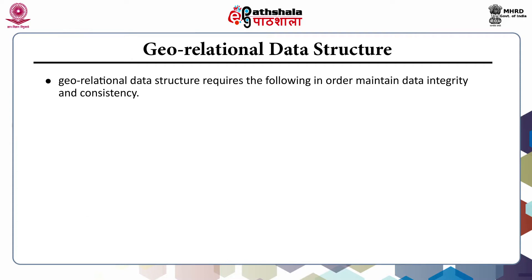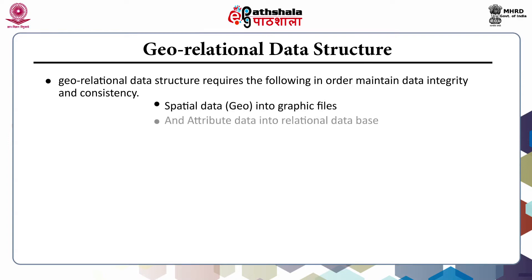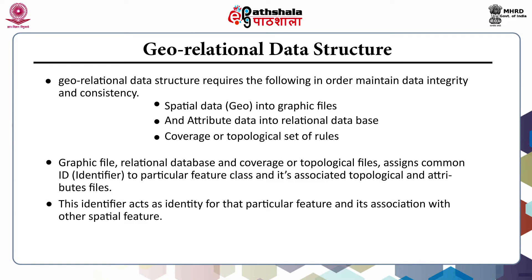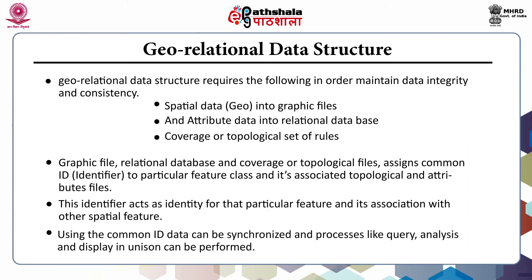It is now clear that geo-relational data structure requires the following in order to maintain data integrity and consistency: spatial data into geographic files and attribute data into a relational database, coverage or topological files, graphic files, and relational database. It assigns a common ID, that is identifier, to a particular feature class and its associated topological and attribute files. This identifier acts as the identity for that particular feature and its association with other spatial features. Using the common ID, data can be synchronized and processes like query, analysis and display in union can be performed.